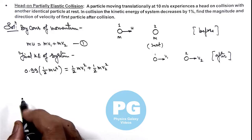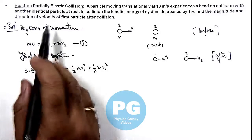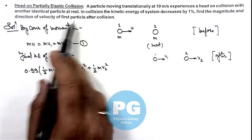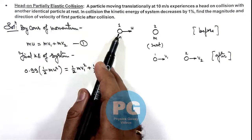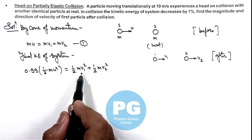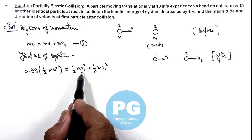We are required to find the magnitude and direction of velocity of the first particle after collision — that means we wish to calculate the value of v1.